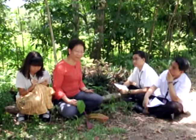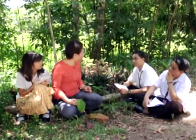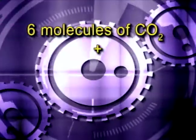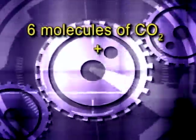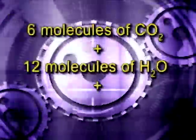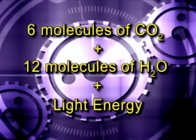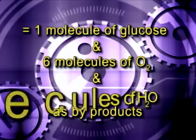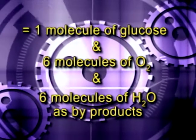In photosynthesis, the raw materials are carbon dioxide and water. The product is a simple sugar called glucose. Oxygen and water are released as by-products. The overall equation for photosynthesis is six molecules of carbon dioxide plus twelve molecules of water, in the presence of light energy, converted into one molecule of glucose, and six molecules of oxygen as well as six molecules of water given off as by-products.